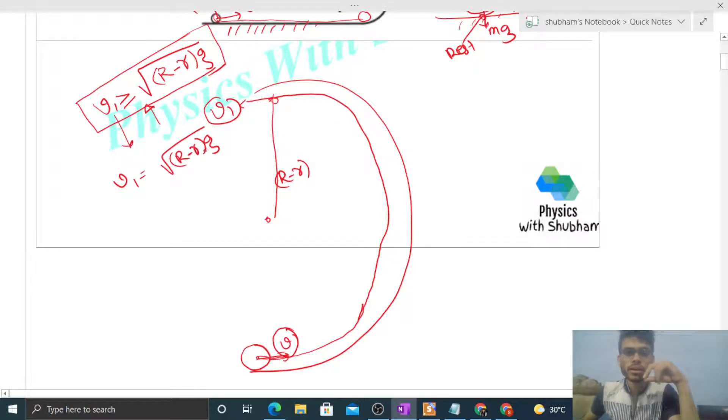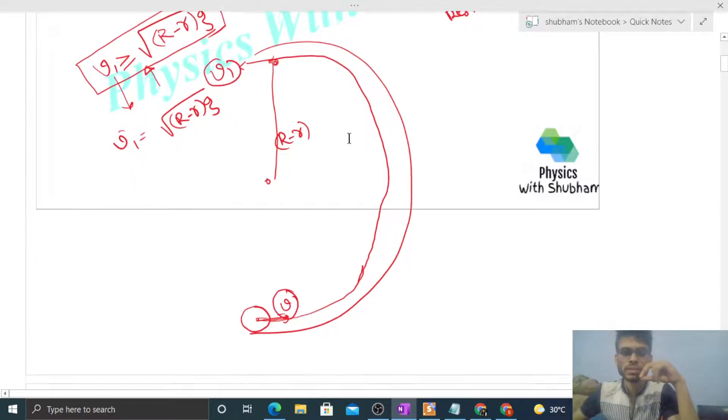So for completing the circle, the minimum speed at the top is known and we have to find out minimum speed at the bottom, right? So you can see, what we can do is use conservation of mechanical energy. Because in rolling there is no slipping, so heat is not generated. So there is no loss of energy. Right, so you can conserve the mechanical energy.